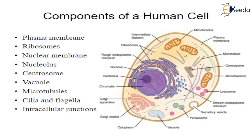Centrosome. A small body located near the nucleus, called the microtubule organizing center. It has a dense center and radiating tubules. The centrosome is where microtubules are made. During cell division, the centrosome divides and the two parts move to opposite sides of the dividing cell. The centriole is the dense center of the centrosome. Vacuole. A fluid-filled, membrane-surrounded cavity inside a cell. The vacuole fills with food being digested and waste material on its way out of the cell. There are specialized vacuoles which function to store fat as fat droplets.